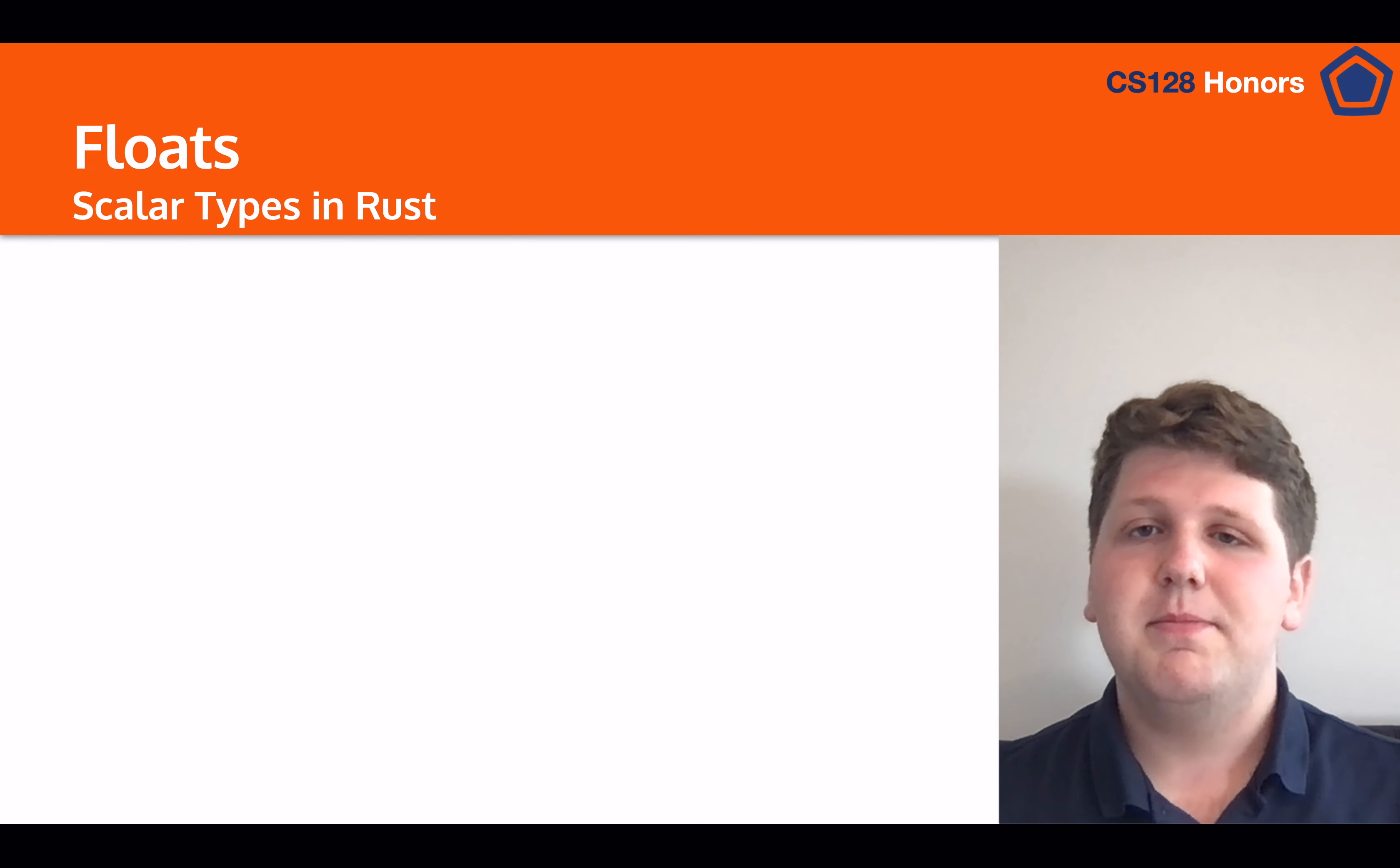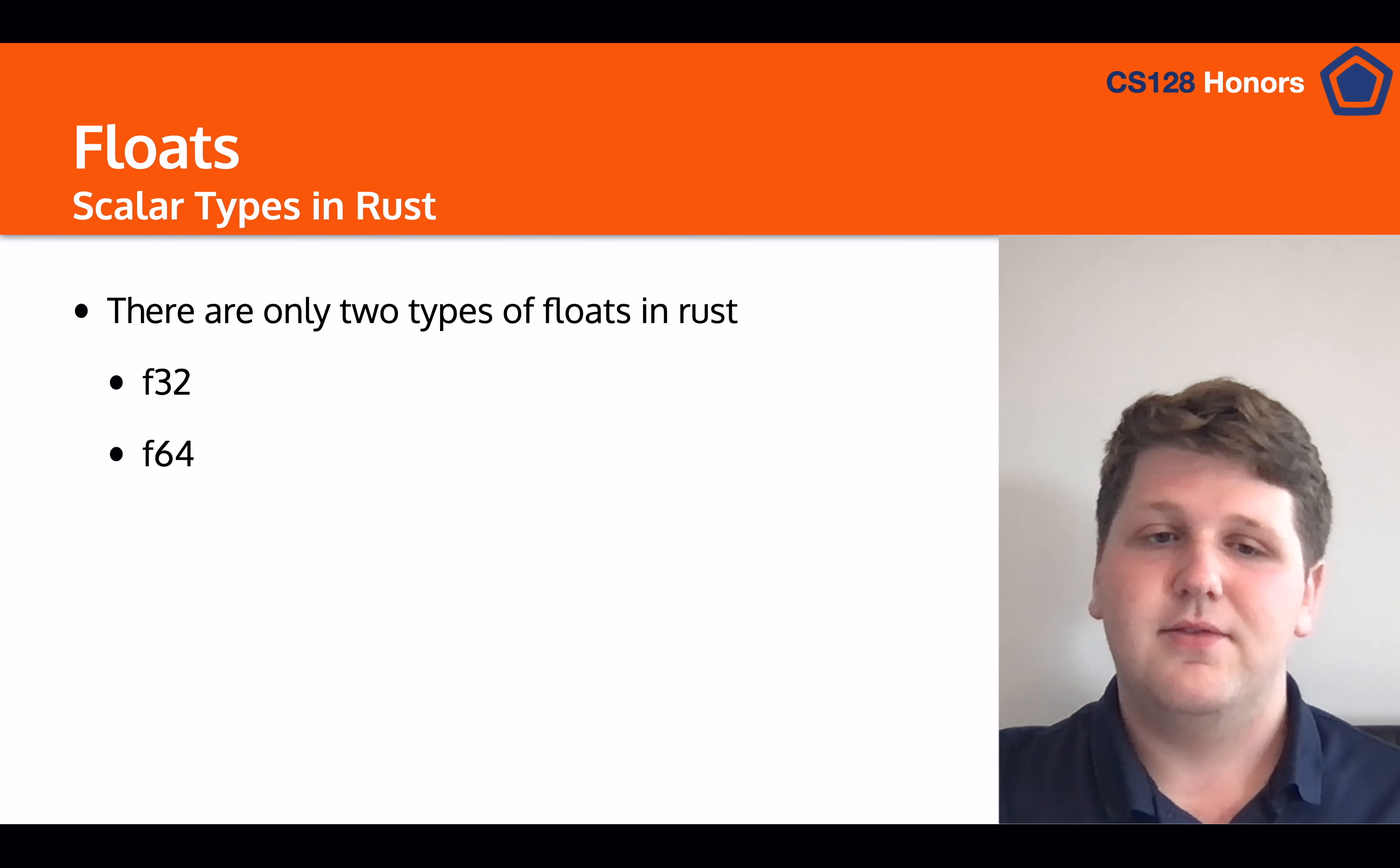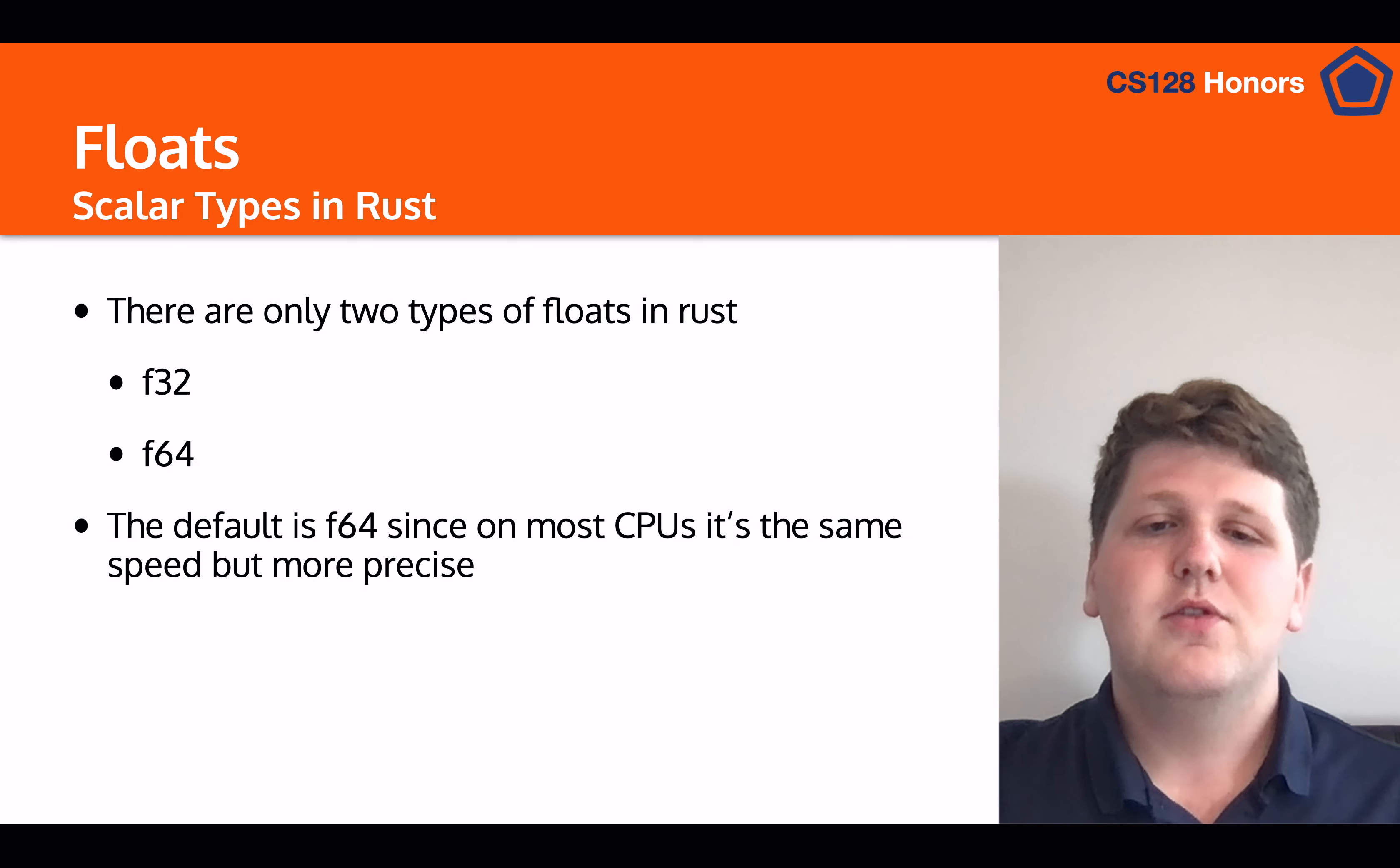So the next type that we're going to talk about is floats. And floats in Rust, similar to other languages, store integers but also decimal points. So you're able to have, say, a value of 3.25. And in Rust, there are two types of floats. There's f32 and f64, which, as you may imagine, corresponds to which amount of bits that you're using to store these floats in.